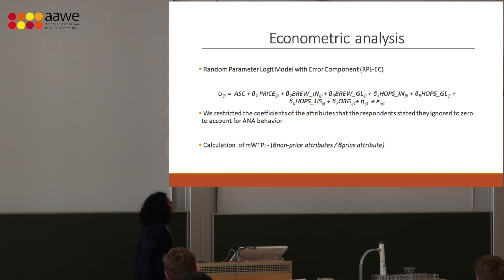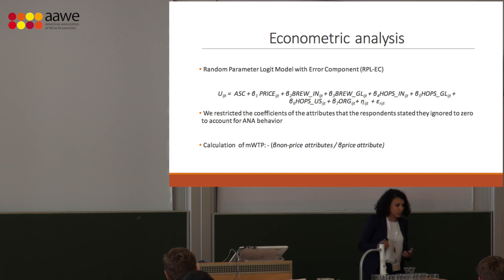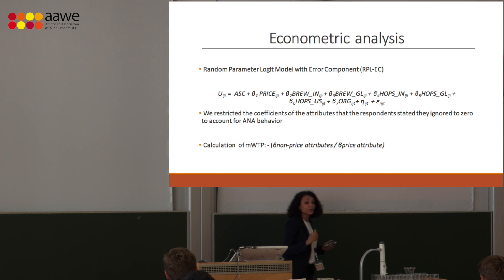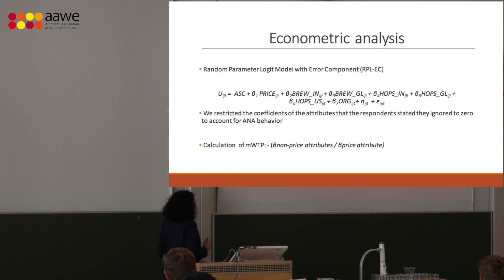For the econometric analysis, we used a random parameter logit model with error components, and restricted the coefficient to zero for attributes that respondents stated they had ignored. From this, we calculated our marginal willingness to pay estimates.